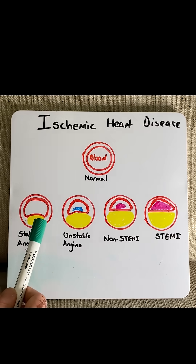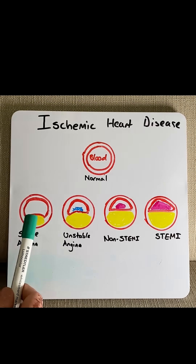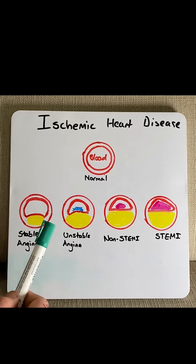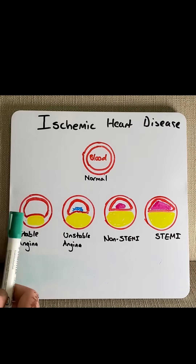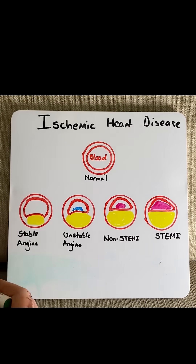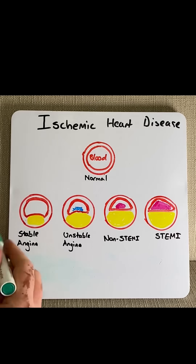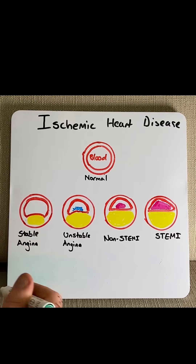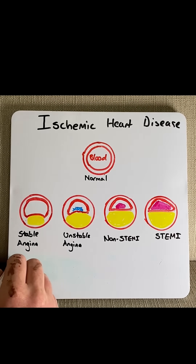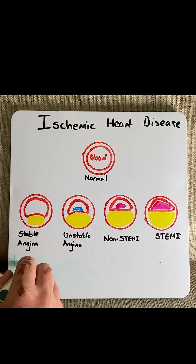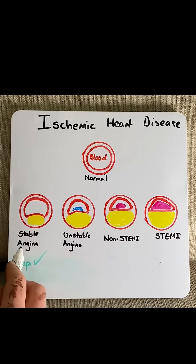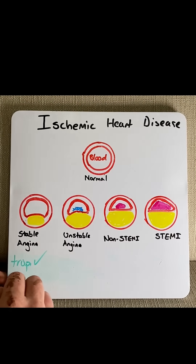This becomes most problematic when the patient is exerting themselves, such as during exercise, but the chest pain is usually relieved on rest. Because there's no damage to the heart in this form, we see no changes to cardiac enzymes — particularly troponin is normal. ECG changes are usually also normal.